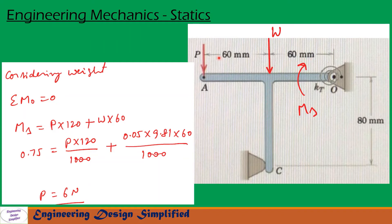P is acting at a distance of 60 plus 60, that is 120 mm from point O, and the torsional spring at point O exerts a clockwise moment of 0.75 Nm. To break the contact at C, all the moments about point O must equal zero. Now let us write the moment equation.